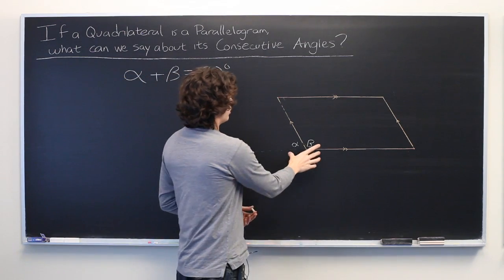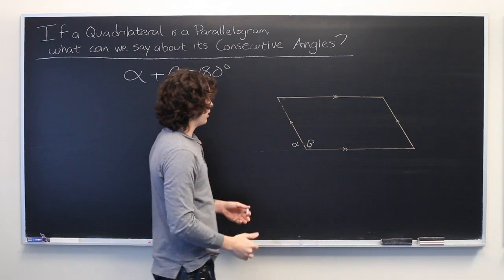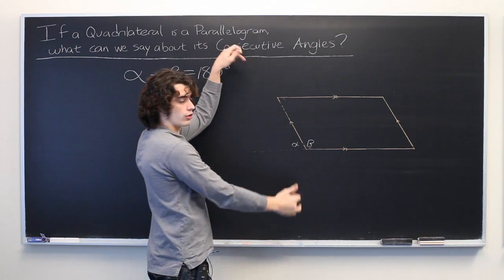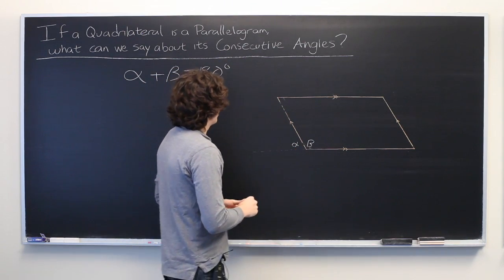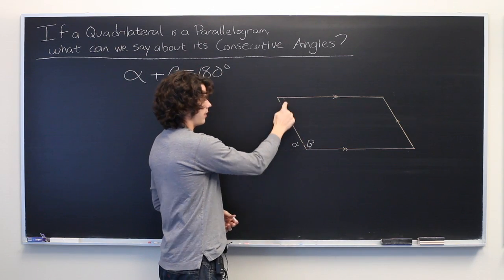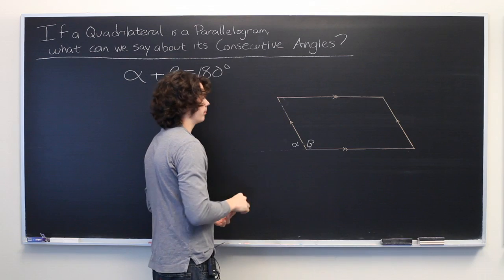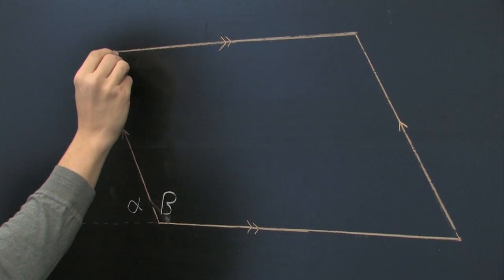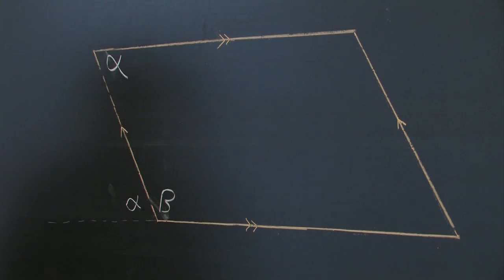Great. But if these two lines are parallel, then we can think of this side here as being a transversal. And the Alternate Interior Angle Theorem states that this angle and this angle must be equivalent. So we know that this is also alpha.